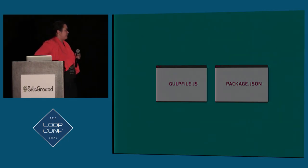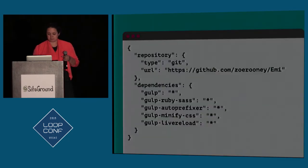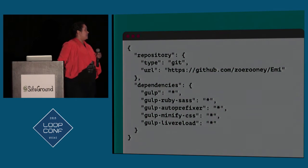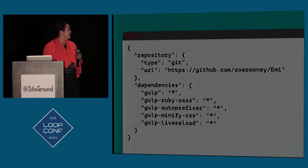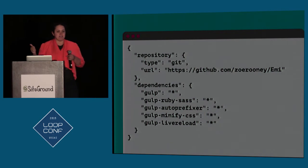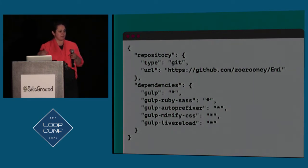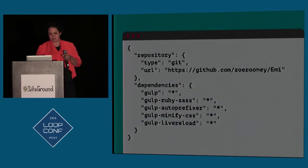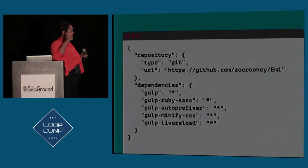When you use Gulp, all this adds to your project is a Gulp file — which is your configuration file — and a package file, which tells Gulp what packages you're going to use. This is an example of a package file. It tells you the project repository info at the top, and then all the different Gulp packages you want to use. For this example, it's saying I want to use Gulp itself, Gulp's Ruby SASS compiling tool, auto-prefixer, CSS minification, and live reload. Live reload lets you save your files, compile them, auto-prefix them, minify them, and then automatically reloads your local site in the browser without a manual refresh.